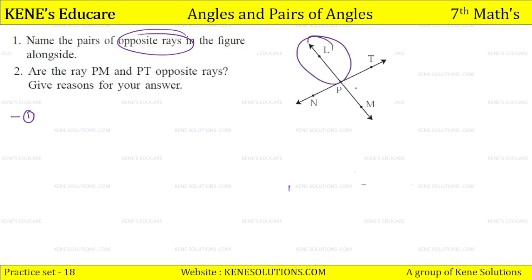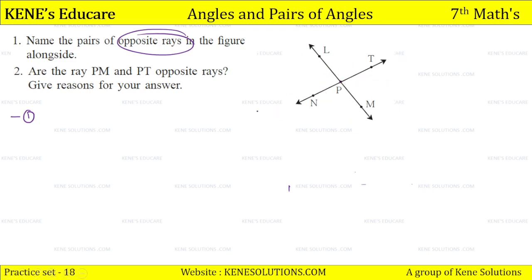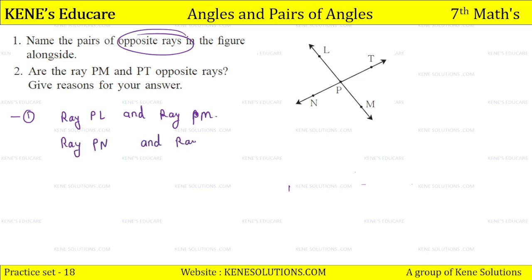So here we have the answer: ray PL and ray PM are opposite rays. And ray PN and ray PT are another pair of opposite rays. So we write down the solution: ray PL and ray PM, and ray PN and ray PT.